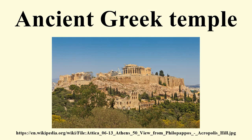A dipteral temple is equipped with a double colonnade on all four sides, sometimes with further rows of columns at the front and back. A pseudo-dipteral has engaged columns in the inner row of columns at the sides. Circular temples form a special type; if they are surrounded by a colonnade, they are known as peripteral tholoi. Although of sacred character, the function as a temple can often not be asserted. A comparable structure is the monopteros, which lacks a cella.